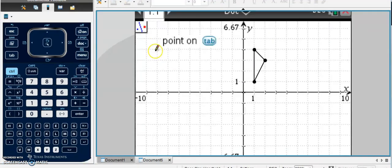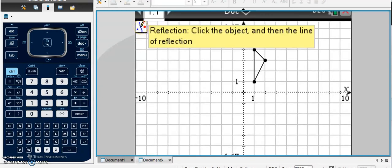If you ever forget how to do this, you can simply hover over this little icon in the top left-hand corner, and it will tell you that you're first going to click on the object, and then you're going to click on the line of reflection.